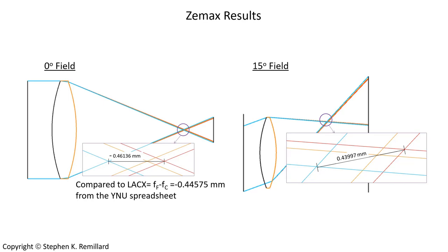It's a good question to ask about field. I set the spreadsheet up to look only at light incident parallel to the optic axis. Repeating the same exercise in Zemax at a 15-degree field, we find LACX equal to minus 0.43997 millimeters — not much different. This is an important takeaway: the axial chromatic aberration does not depend strongly on field angle, and so I'm satisfied with the spreadsheet only doing the angle parallel to the optic axis.